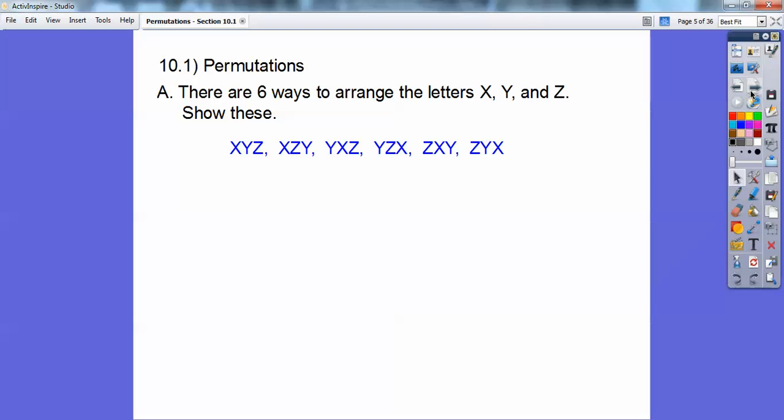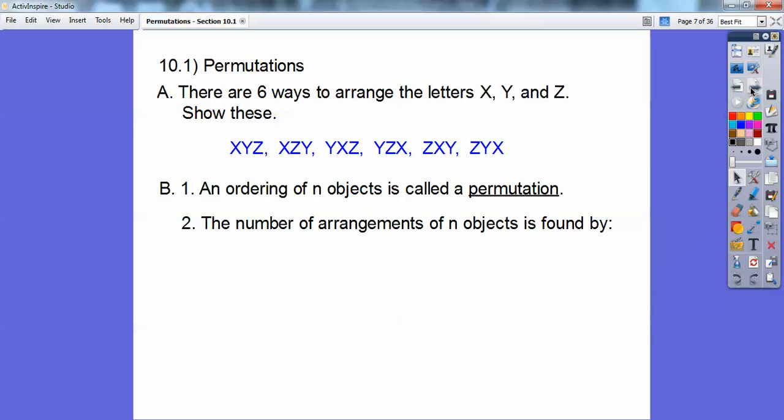So we're interested in the number of ways we can do that. An ordering of n objects, up here it was three objects, is called a permutation. The number of arrangements of n objects is found by n factorial, that is n times (n-1) times (n-2) all the way down to 3 times 2 times 1. So above there's three letters, so 3 factorial equals 3 times 2 times 1 equals 6 different ways.